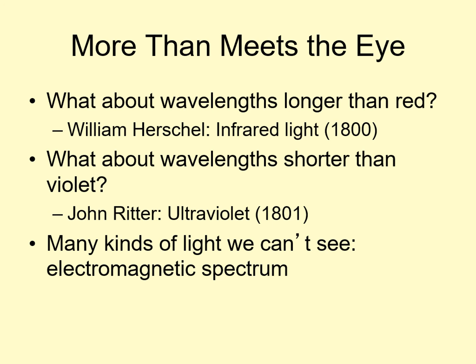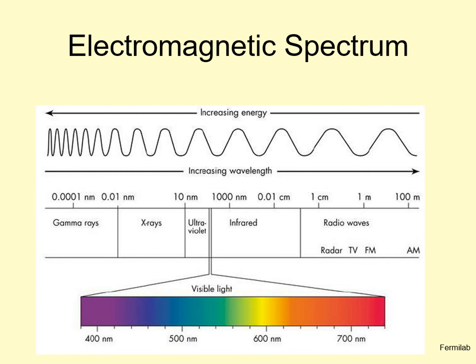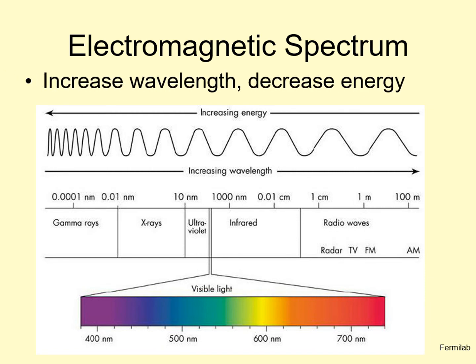We call the full range of all forms of light of all wavelengths the electromagnetic spectrum. Here's a diagram of the electromagnetic spectrum. As you go to the right, you get to longer wavelengths or lower photon energies. Also notice the different types of light listed.